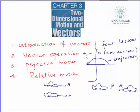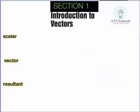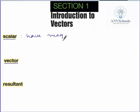Now let's move to the first section: introduction to vectors. What are vectors? What do they look like, and what are the necessary things we use to represent them? In our previous sections, we defined scalars and vectors. Scalars are physical quantities which have magnitude but no direction.